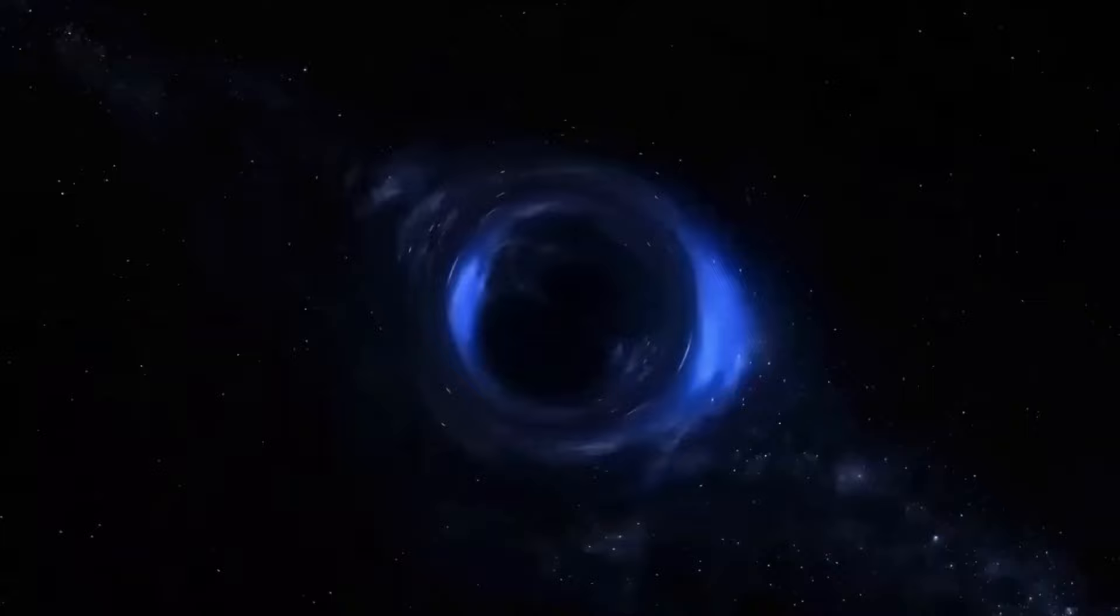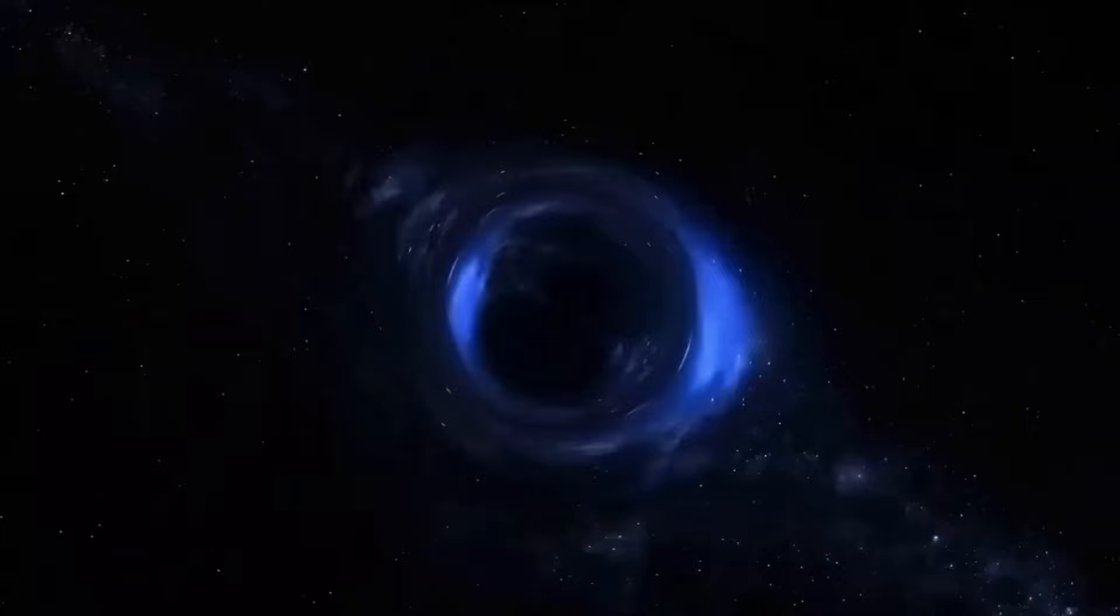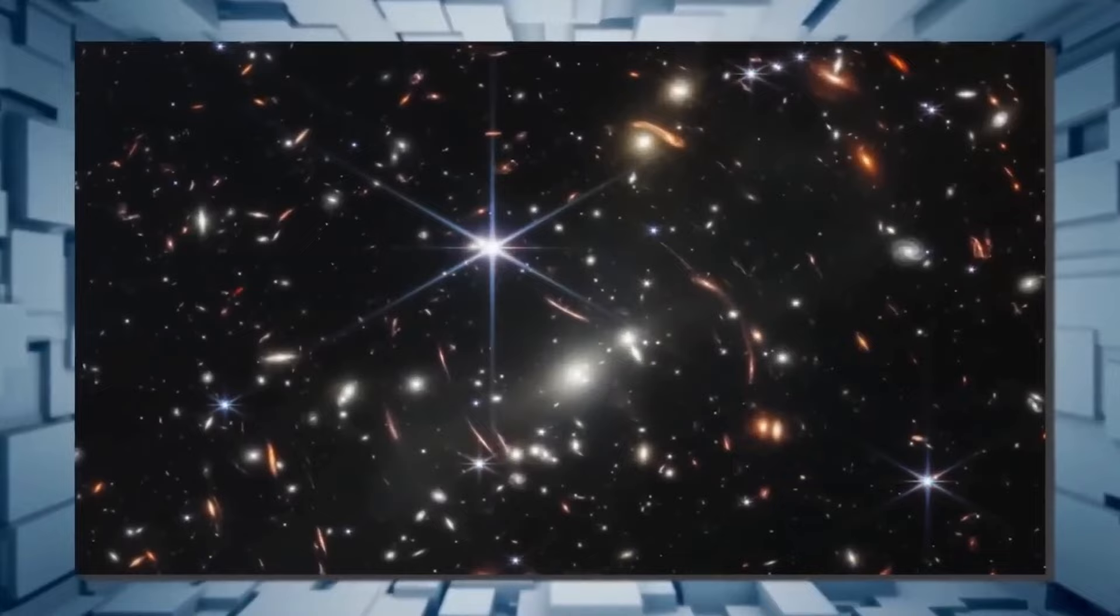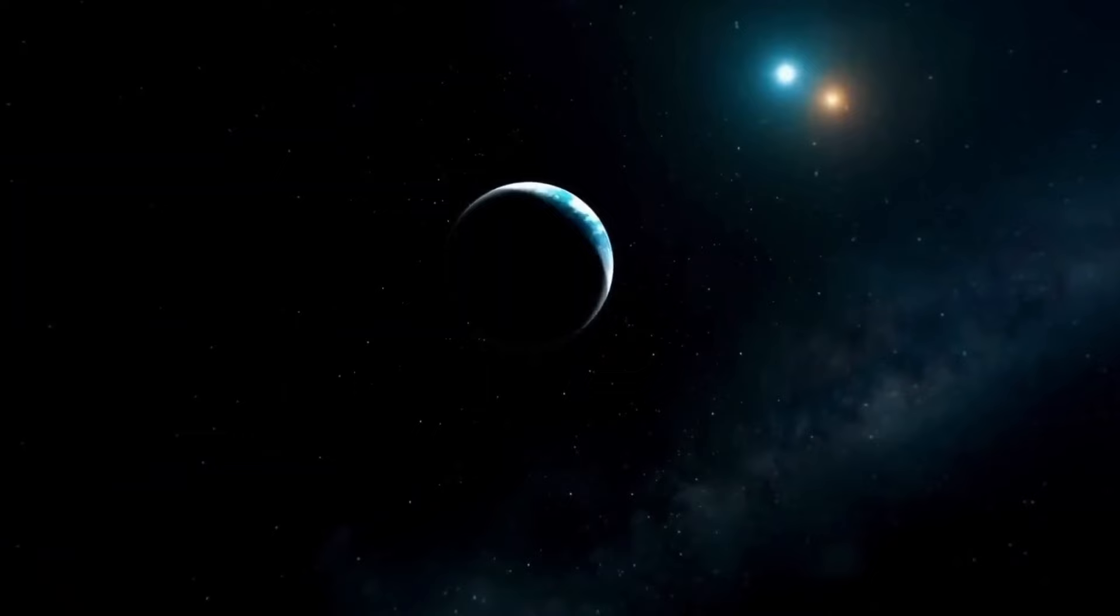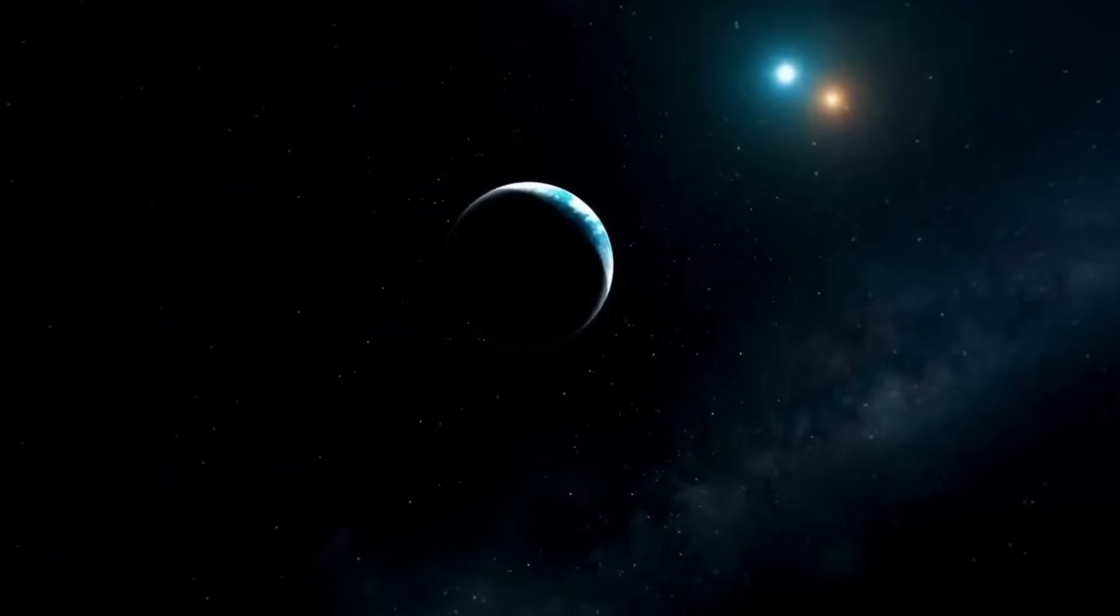Number six, the most massive galaxy cluster for its time. Although galaxy clusters are found all across the universe, they're expected to grow larger and larger in mass over cosmic time. For the time at which it was discovered in the universe, the El Gordo galaxy cluster, imaged here by James Webb, is the most massive one known with over two quadrillion solar masses of material inside it.